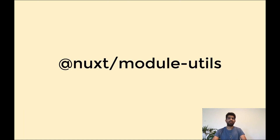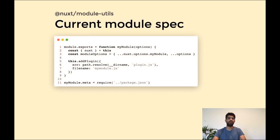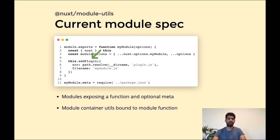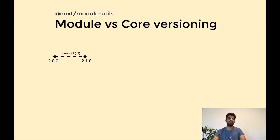One of the really biggest things we are going to introduce with Nuxt 3 is Nuxt module utils. Before that, let's see how we currently create a module with Nuxt 2. Basically with Nuxt you have to export a function, and this function is bound to some utilities from the module container that comes from the Nuxt core. These utilities allow us to easily interact with the core — for example, for adding a plugin we can use the addPlugin utility, or for hooking into the internals.